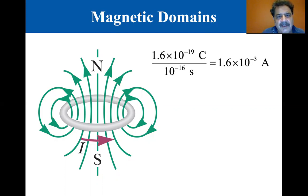in 10 to the minus 16 seconds. That would produce about 1.6 times 10 to the minus 3 amps.